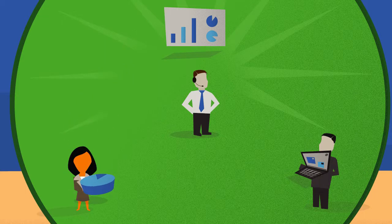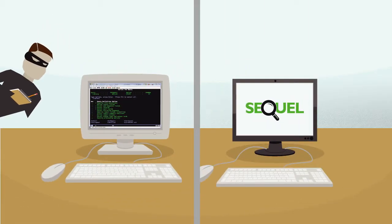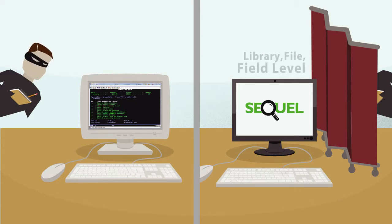Restricting what users can access is also a worry with Query 400 — it's just not as secure as SQL. With SQL, you have full control over what information is made available and to whom. SQL respects all AS400 object authority. If you need it, SQL can provide an additional layer of security for library, file, and field level. SQL's auditing system can even monitor and track SQL usage, so you know exactly what data users have accessed.